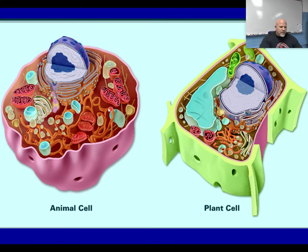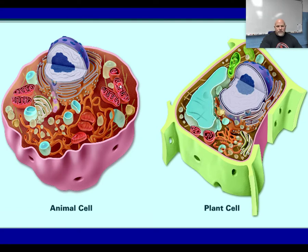You have a Golgi for processing and packaging proteins — you see the same thing in plant cells. You have mitochondria used to convert sugar into ATP, which is usable energy, and you have the same thing in plant cells.